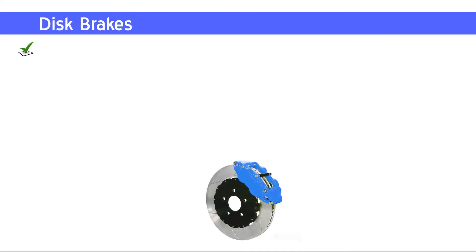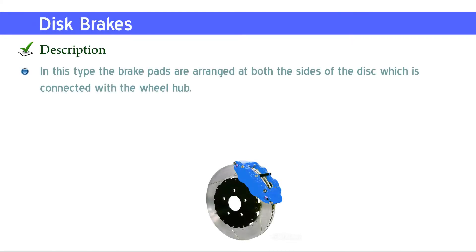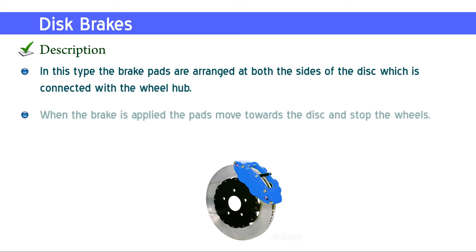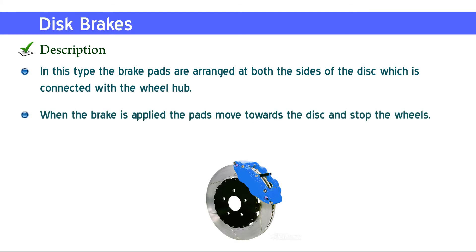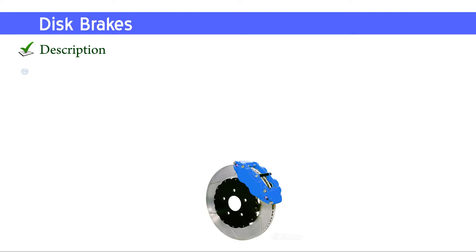Disc brakes. In this type, the brake pads are arranged at both sides of the disc, which is connected with the wheel hub. When the brake is applied, the pads move towards the disc and stop the wheels.